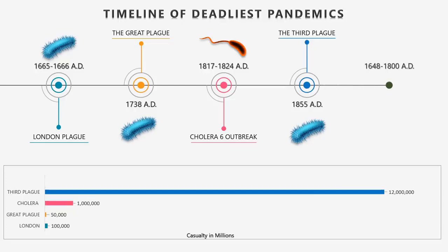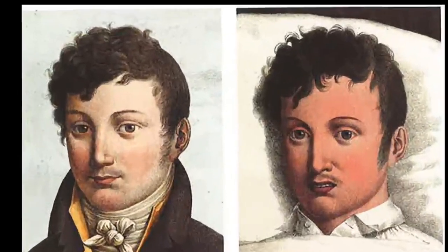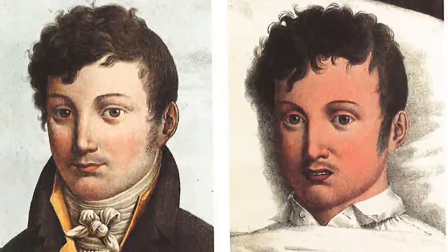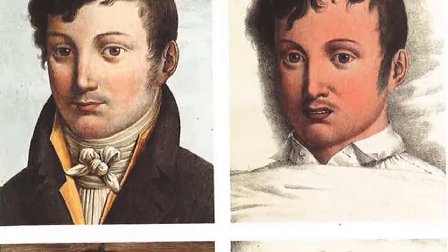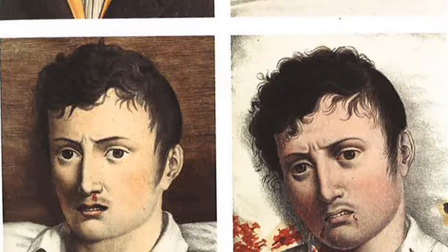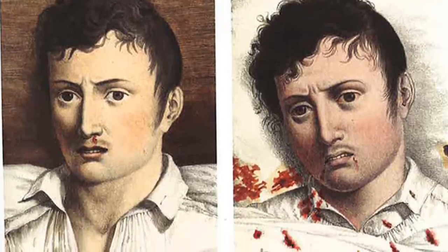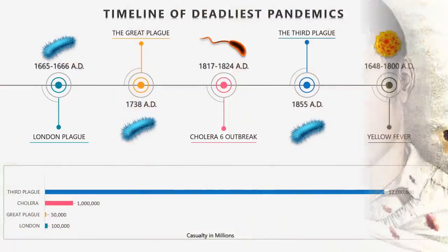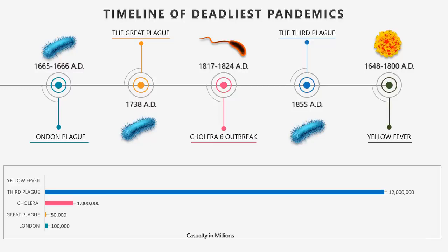At number 11: Yellow Fever. The virus originated in Africa and was brought to the Western Hemisphere during the slave trade era, with the first epidemic reported in 1648 in the Yucatan. Over the ensuing 200 years, outbreaks occurred widely in tropical America, North American coastal cities, and Europe. The disease is caused by the yellow fever virus and spread by the bite of an infected female mosquito. Yellow fever killed more than 100,000 people.